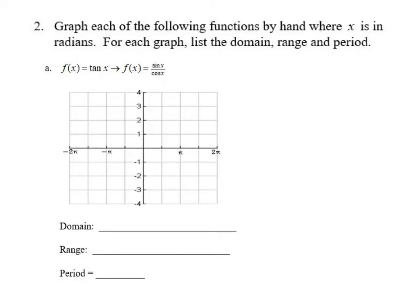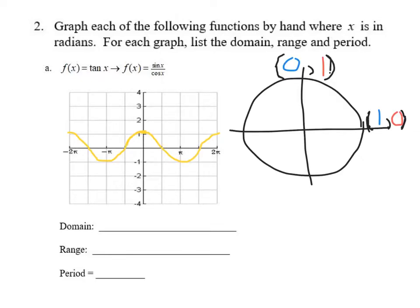We're trying to graph y equals tangent of x. We're going to look at it in terms of sine and cosine, because tangent is sine over cosine. What we'd like to do is really pay attention to the denominator — it's going to dictate what happens to the graph of tangent. I've taken the liberty of drawing in the cosine curve and sketched in a unit circle. Starting at the y-intercept, the tangent of 0 is 0, because sine is 0 and cosine is 1, so the point (0, 0) is on our curve.